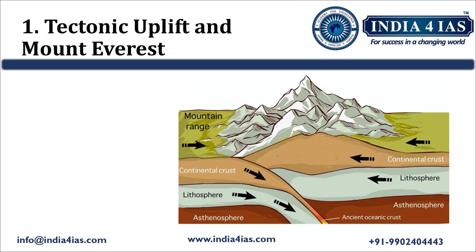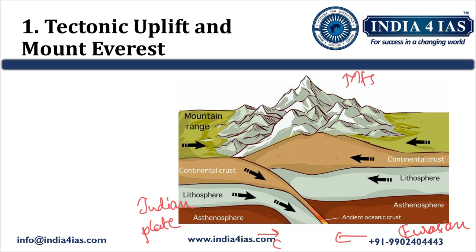Here we have a graphical representation of the formation of Mount Everest and the Himalayan system. The Indian plate is subducting beneath the Eurasian plate, and because of this continental-continental collision, there is a rise of the Himalayan system. As per plate tectonic theory, the tectonic forces are still ongoing — the Indian plate continues moving towards the Eurasian plate, with the Himalayas rising approximately 5 mm per year, and Mount Everest continues to grow as a result.